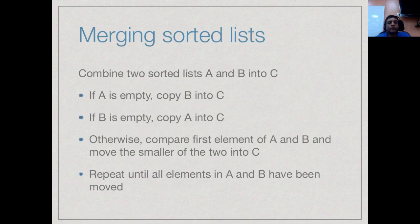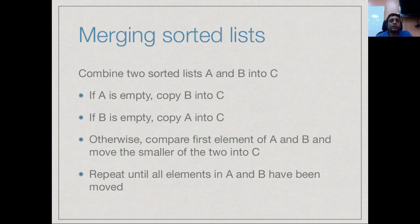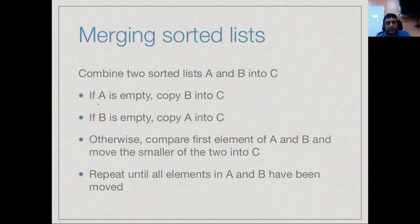Let us now formalize the merge sort algorithm as actual code. To combine two sorted arrays A and B into a third sorted array C: if one of them is empty, we just copy the other into C. If A is exhausted, copy the rest of B into C; if B is exhausted, copy A into C. Otherwise, compare the first elements of A and B, move the smaller into C, and repeat until everything has been moved.